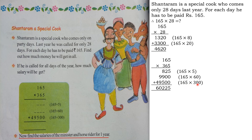For 165 × 300, two zeros are placed and then 165 × 3 = 495, giving 49500. Adding all three: 165 × 5 = 825, plus 165 × 60 = 9900, plus 165 × 300 = 49500. The total is rupees 60,225. So we have to pay rupees 60,225 to Shantaram the special cook if he comes for all days of the year.